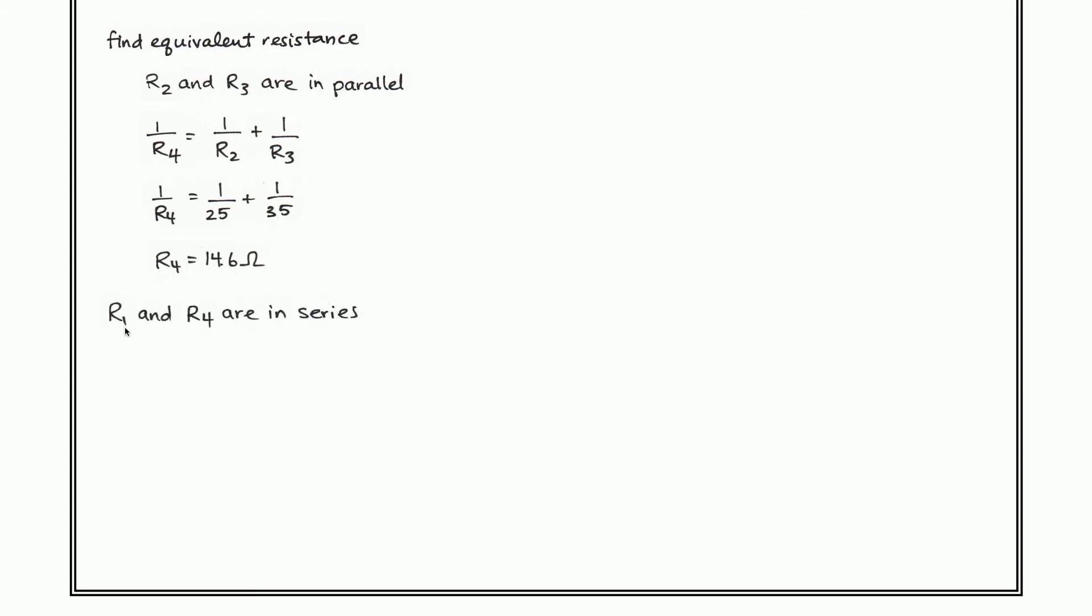But we also know that R1 and R4 are now in series with each other, because what we've done is found an equivalent resistance for those two that are in parallel and replaced it. Now R1 and R4 are in series, and here we have 15 ohms plus 14.6 ohms. So our total equivalent resistance for this circuit is 29.6 ohms.